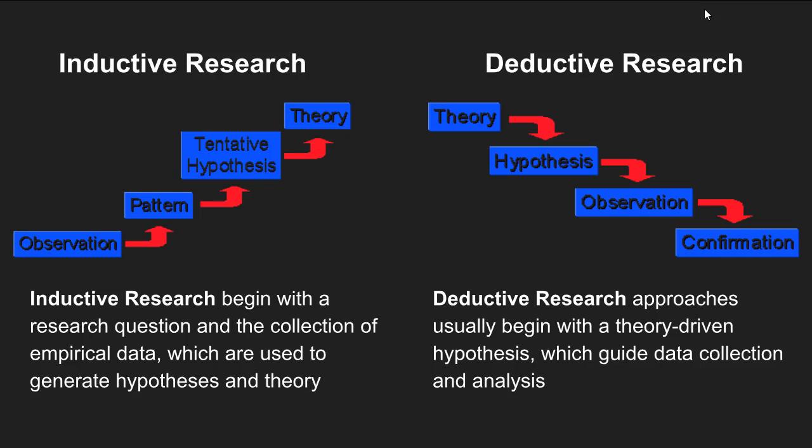Deductive research is different from inductive research. In deductive research, you begin with a theory — a set of ideas about the social world that existed before you started your research. Based on this existing theory, you develop hypotheses which you test using empirical observations. You either confirm or refute those hypotheses, and that either provides further support for the theory or may propose a new set of hypotheses or a new angle of the theory.